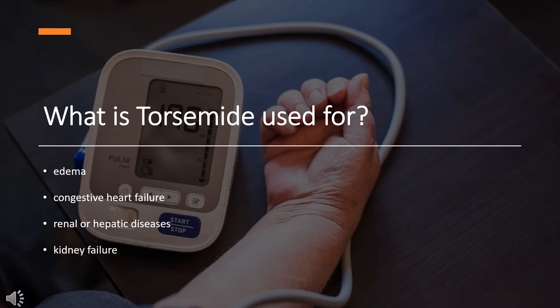What is torsemide used for? Torsemide is indicated for the treatment of edema associated with congestive heart failure, renal, or hepatic diseases. It has been observed to be very effective in cases of kidney failure. Torsemide is also approved as an antihypertensive agent, either alone or in combination with other antihypertensives.